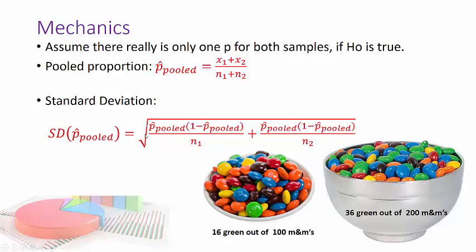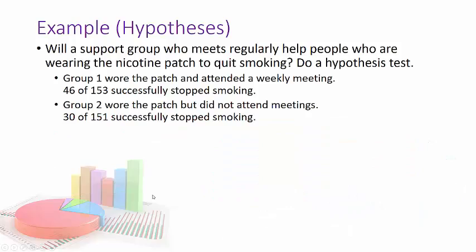Then after that, once we get this, the mechanics are exactly the same. We're still going to calculate a P value. So let's revisit our examples, but this time instead of doing the confidence interval, now we're doing a hypothesis test. So we're still dealing with the people who attended the weekly meetings and wore a patch, and the people who wore a patch but didn't attend meetings.